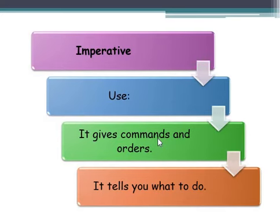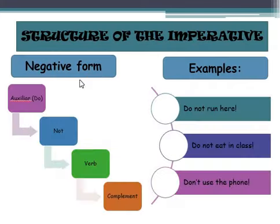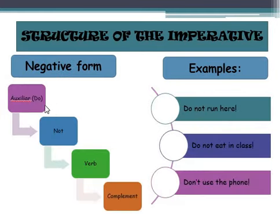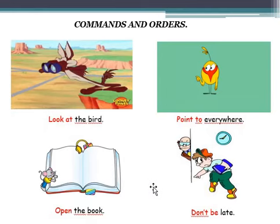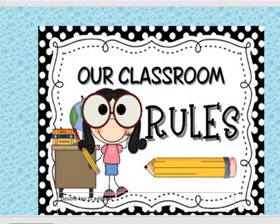So let me summarize: Imperative就是起始句，你要拿来命令别人、教别人做事情的。要分成两种：一种是affirmative form，它前面是用动词开头然后加一个complement；另外一种是negative form，就是叫你不要做什么，所以do not加verb，动词变成在中间，complement在后面.